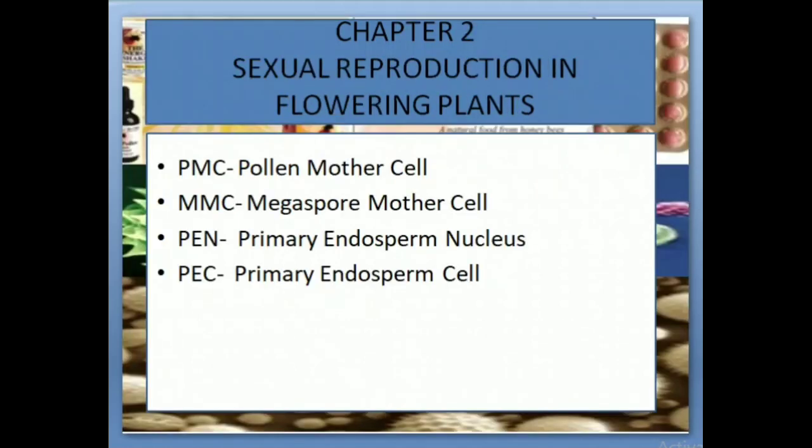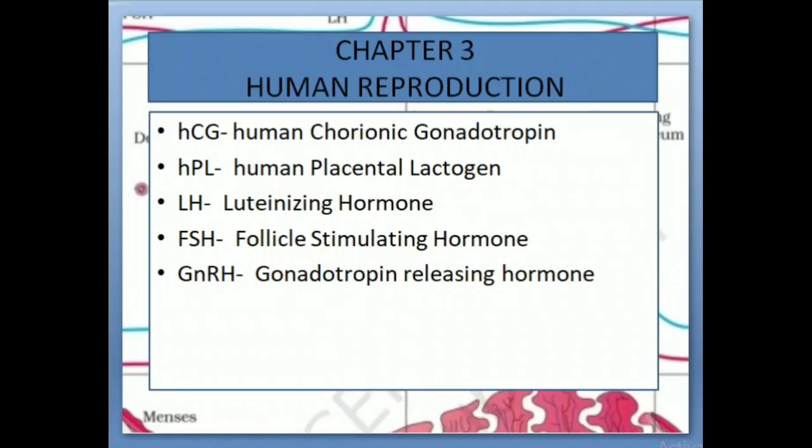Chapter 2: Sexual Reproduction in Flowering Plants. PMC: Pollen Mother Cell. MMC: Megaspore Mother Cell. PEN: Primary Endosperm Nucleus. PEC: Primary Endosperm Cell. Chapter 3.